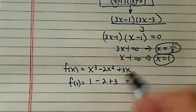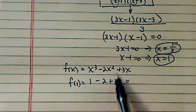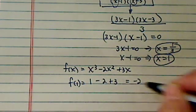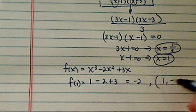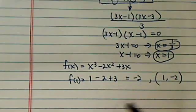So I have 1 minus 2 plus 3, which is 2. So the point is (1, 2), and that's one point.